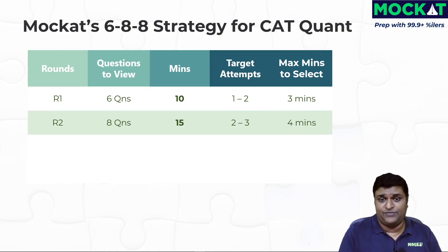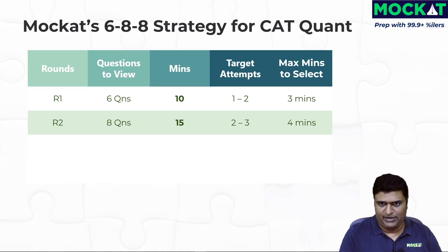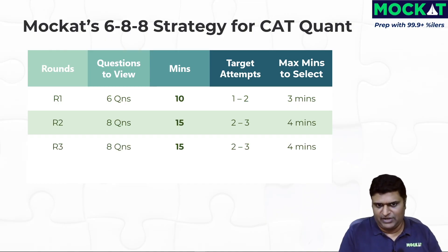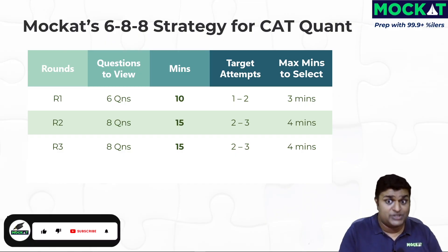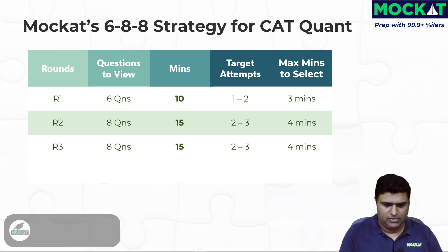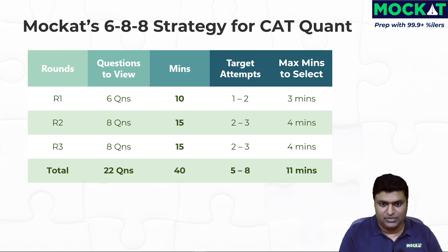Round two: for the next 15 minutes, look at the next eight questions and give yourself a maximum of four minutes to choose two to three questions to attempt. Round three: the last 15 minutes, again eight questions with up to four minutes for selection. So the breakdown of 6-8-8 is 10 minutes, 15 minutes, 15 minutes. Within each block, the first three to four minutes go into selecting questions. Over time, this selection time will reduce.